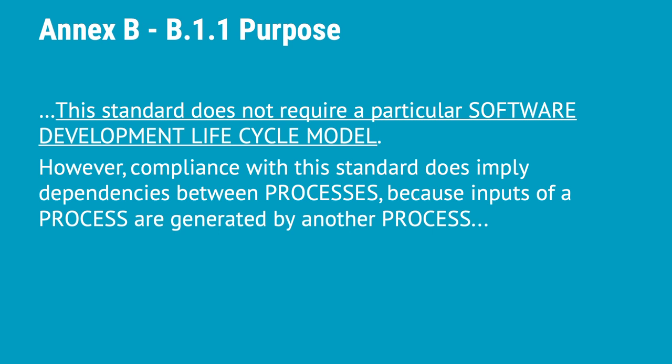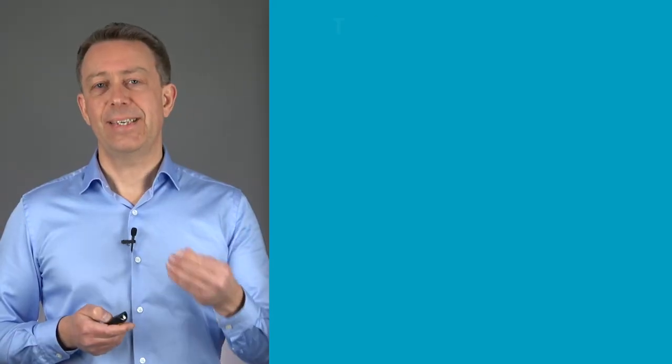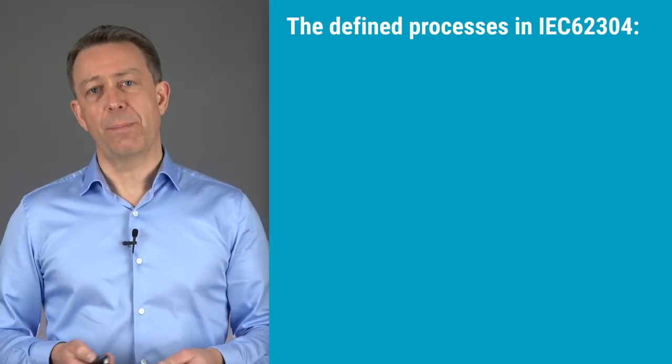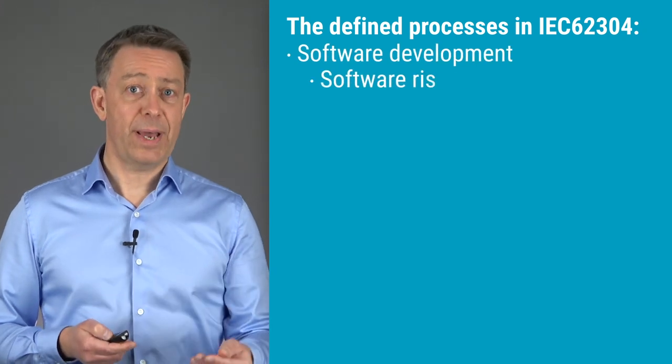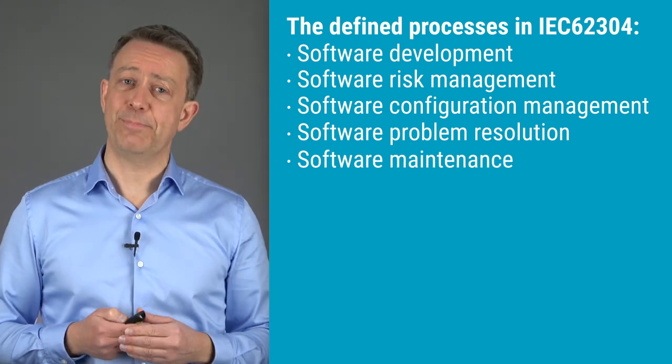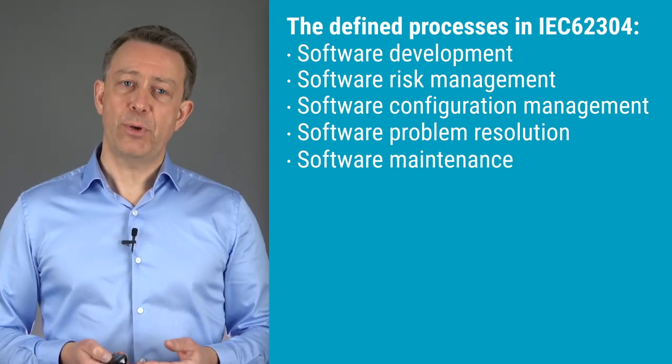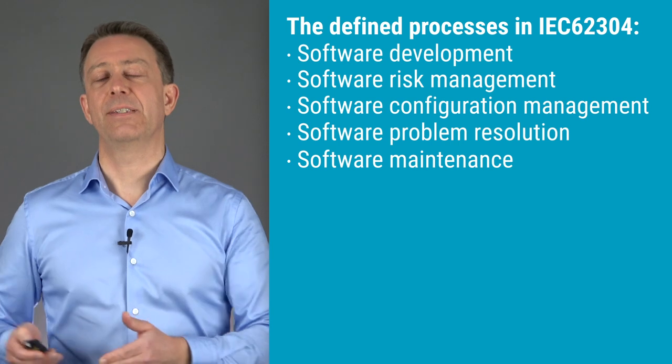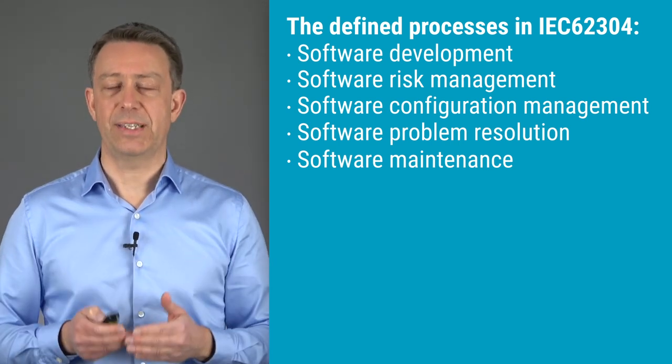But there are no requirements in the standard forcing you to apply a specific development method. You are fully free to use whatever method you want, as long as you acknowledge the process approach and don't skip activities in the standard. The key elements of the standard are development, risk management, configuration management, problem resolution, and maintenance. Each of the processes are divided into activities, with the development process having the most activities.